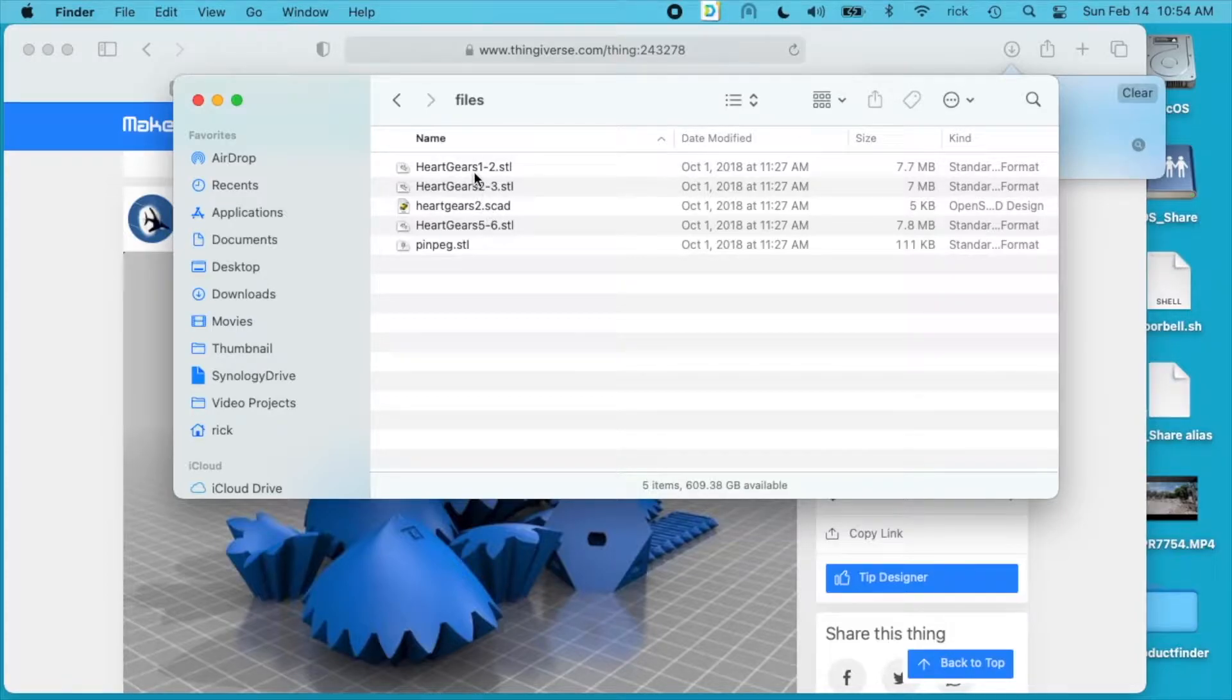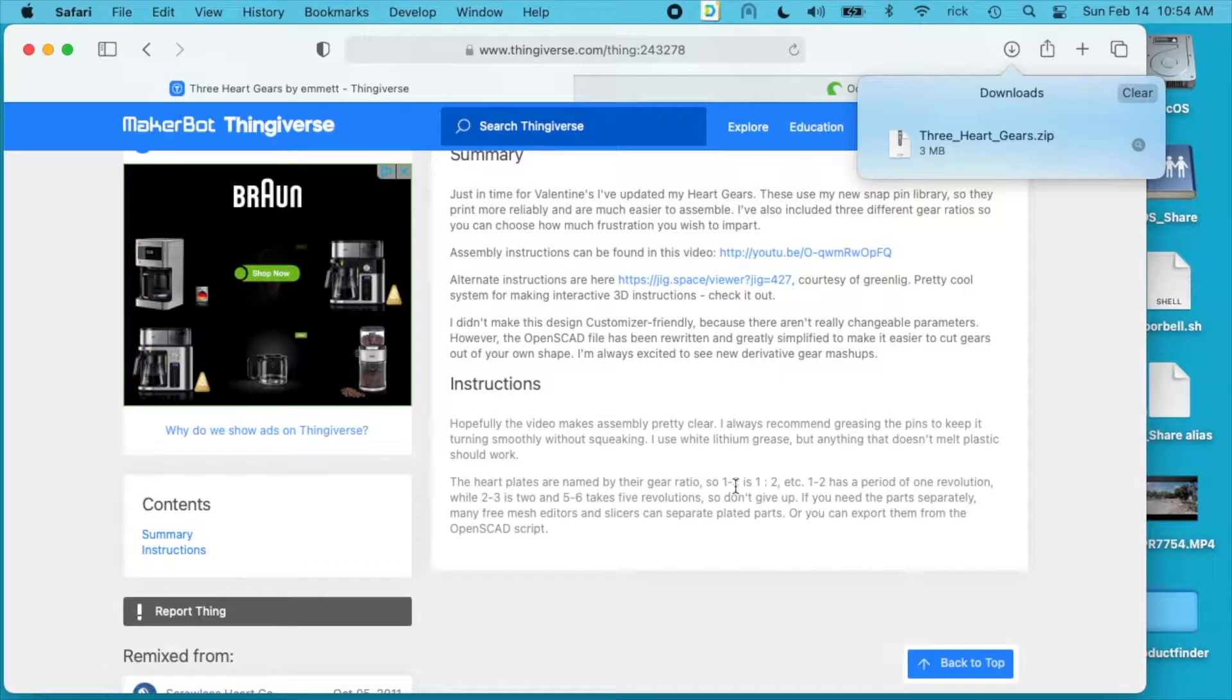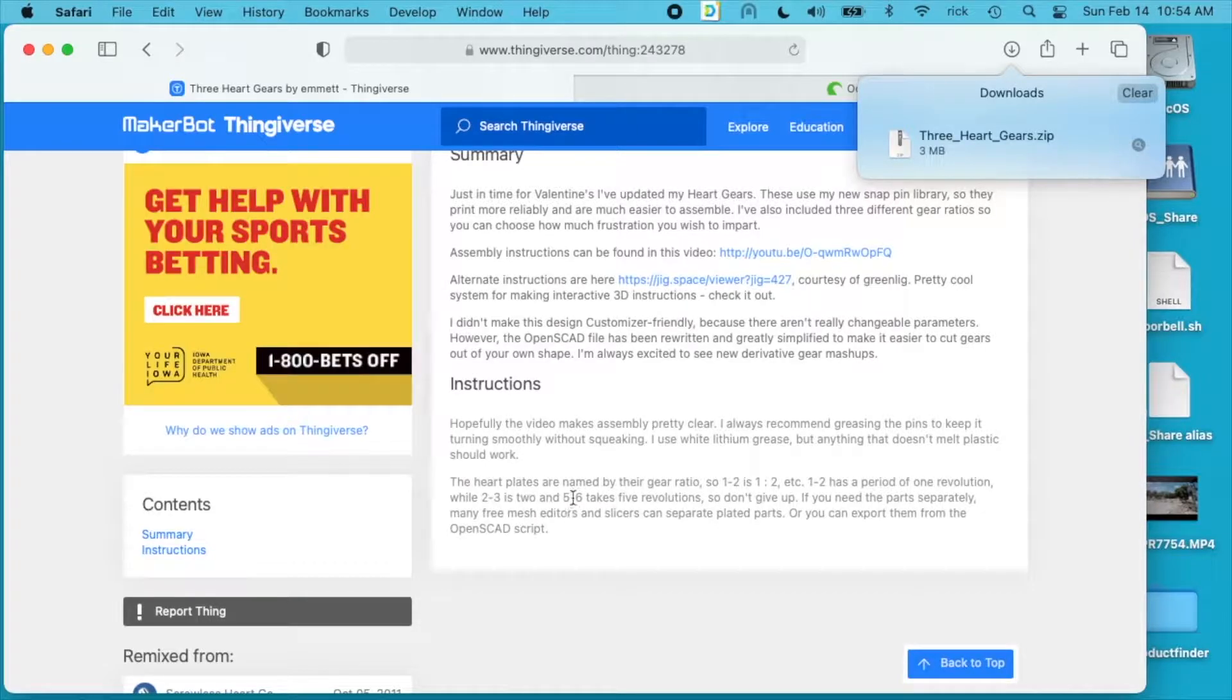If you just want to print the heart itself you have three files: heart gears one, two, and five. If you look at the instructions down here it says there are three different gear ratios: one to two, two to three, and five to six. I've done the one to two before and I'm going to try the five to six this time. So it takes five revolutions of twisting this to turn it into a heart, which I'll demonstrate later.